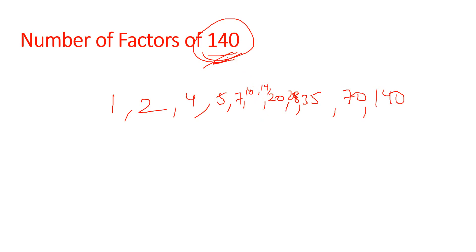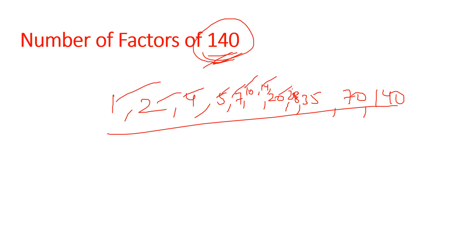Counting all the factors: 1, 2, 3, 4, 5, 6, 7, 8, 9, 10, 11, 12. The number of factors of 140 is 12.